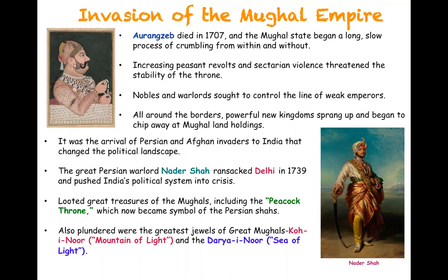The Peacock Throne is now lost — we don't know what happened to it — but we do have images of its resplendence. It was very ornate. Also plundered were some of the greatest jewels of the Mughals, including the famous mountain of light, the Koh-i-Nor, as well as the sea of light, the famous Darya-i-Nor.